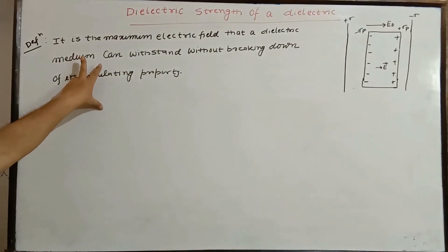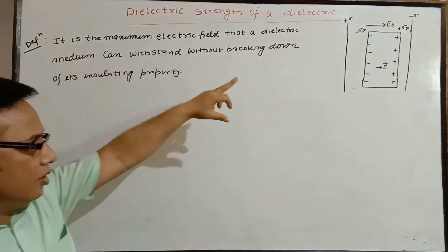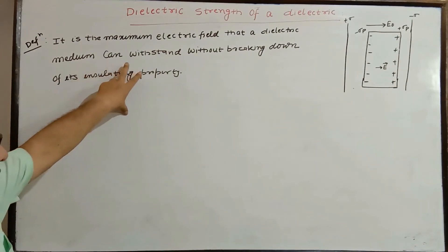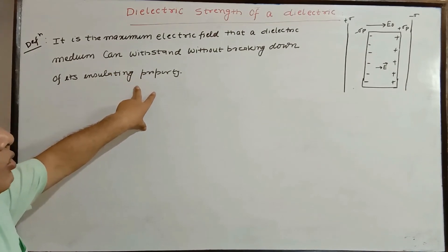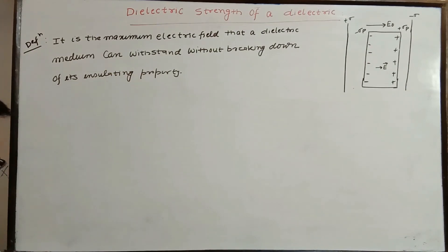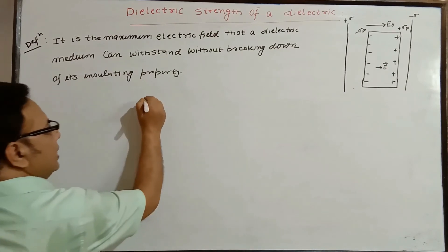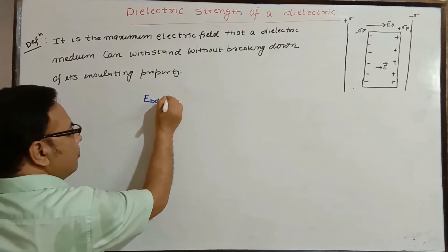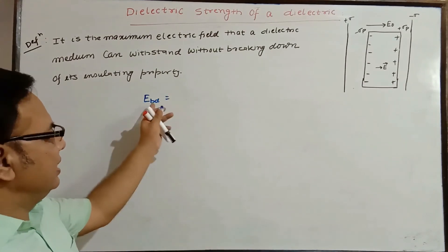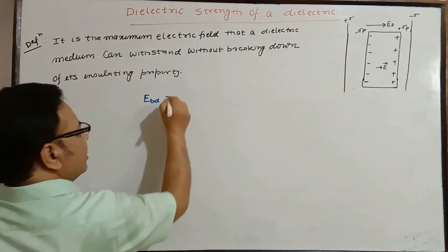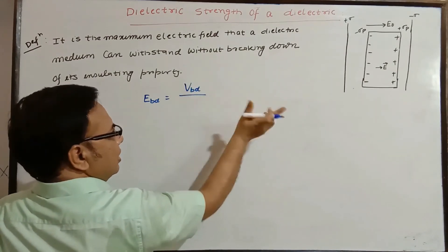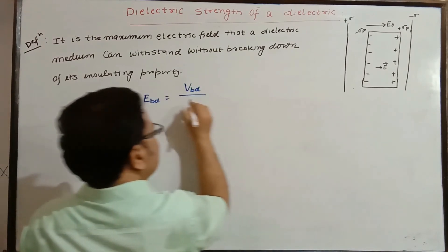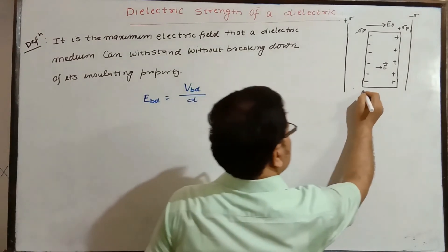Dielectric strength is defined as the maximum applied electric field that a dielectric can withstand without breaking down its insulating property. If E_bd is the breakdown electric field — also interpretable as the potential gradient — it can be written as the applied potential difference for breakdown per unit length or width of the dielectric.